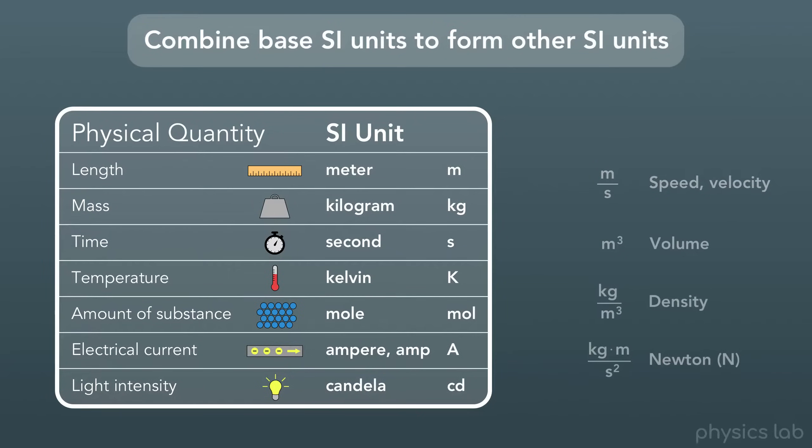The SI unit for volume is cubic meters. For density, it's kilograms per cubic meter. And for newtons, which is the SI unit for force, we use kilogram meters per second squared.